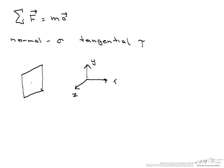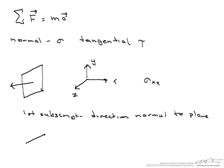The first thing we are going to look at is this normal force that comes out of the plane, normal to the plane. We call this force sigma sub xx. If you look at the two subscripts, the way they are defined is the first subscript is the direction of the normal to the plane. So if you look at that, it is in the x direction.